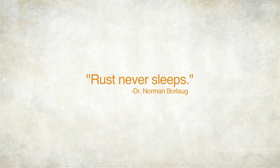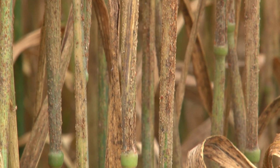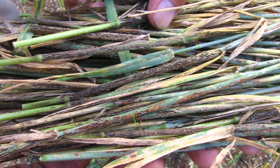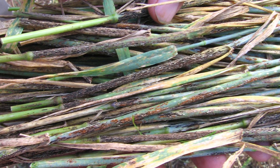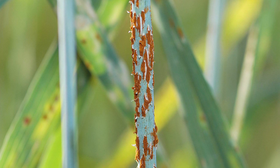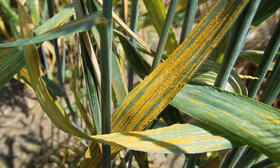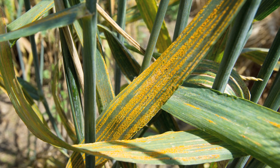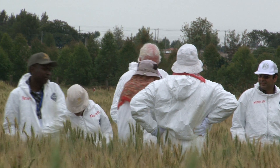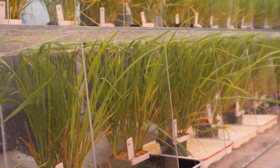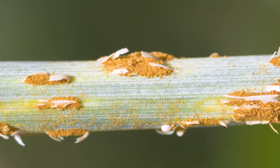Dr. Norman Borlaug reminded us that the fungal microorganisms that cause the devastating rust diseases of wheat are a dynamic threat, capable of evolving novel forms of virulence and overcoming many of the genetic mechanisms of resistance bred into our most advanced varieties. Recent examples include the emergence and rapid spread of the UG99 group of stem rust races, as well as a number of broadly virulent and aggressive races of stripe rust. As we strive to develop strategies of durable resistance to the wheat rust, it's important to understand how wheat rusts evolve.